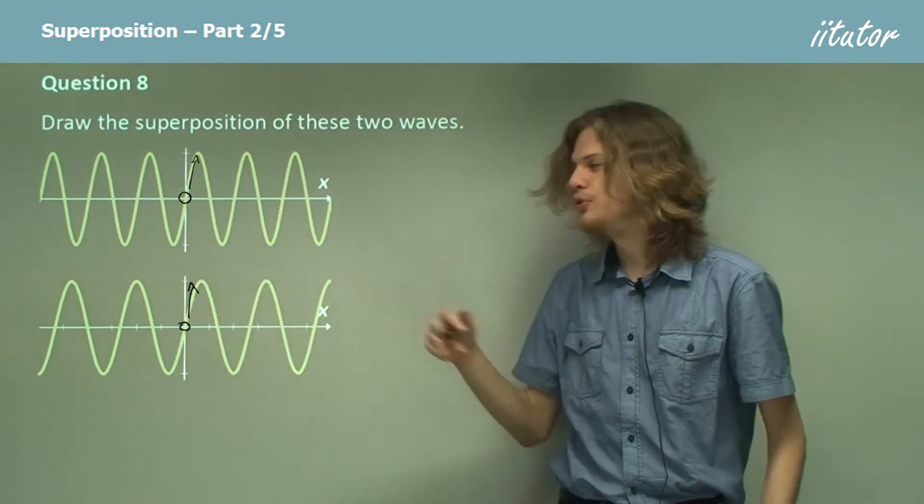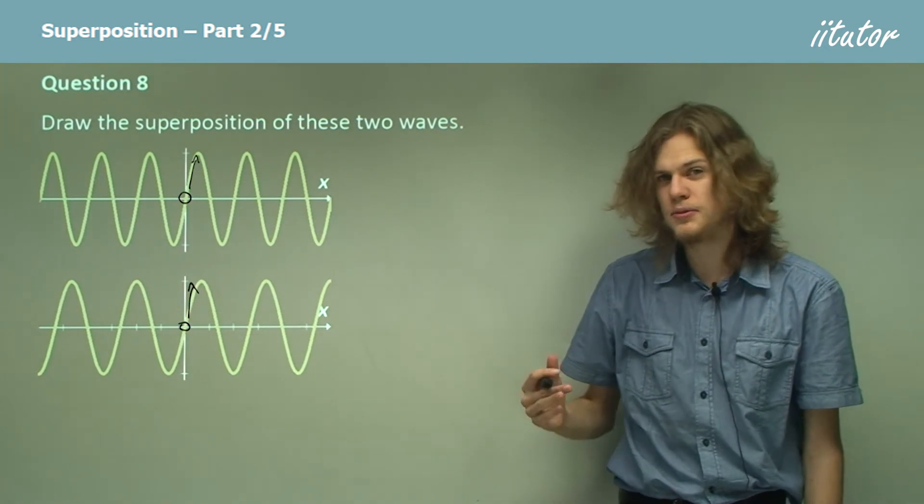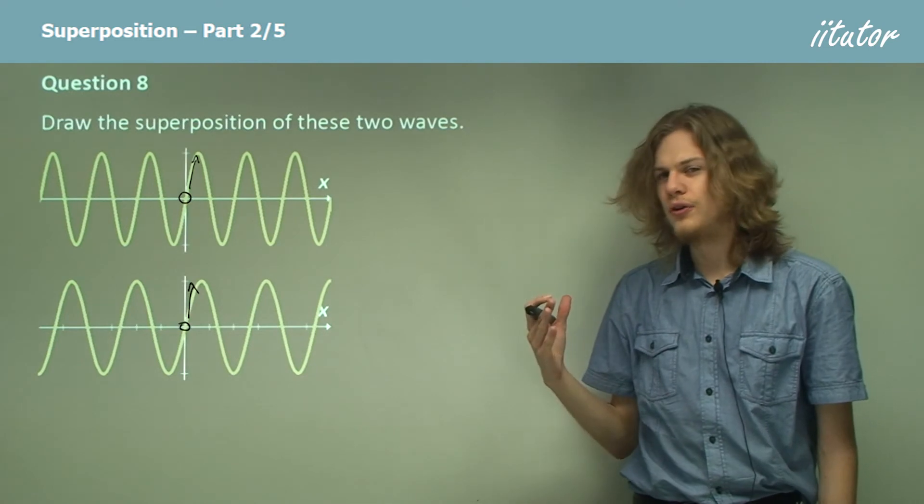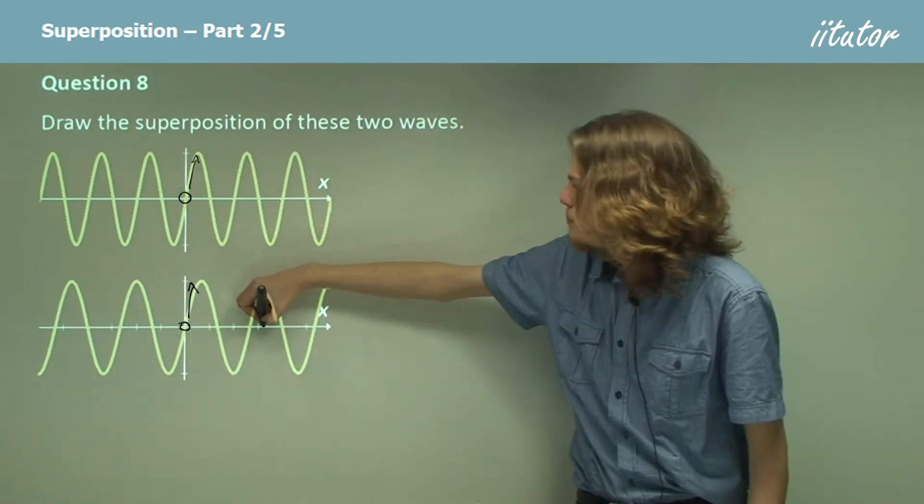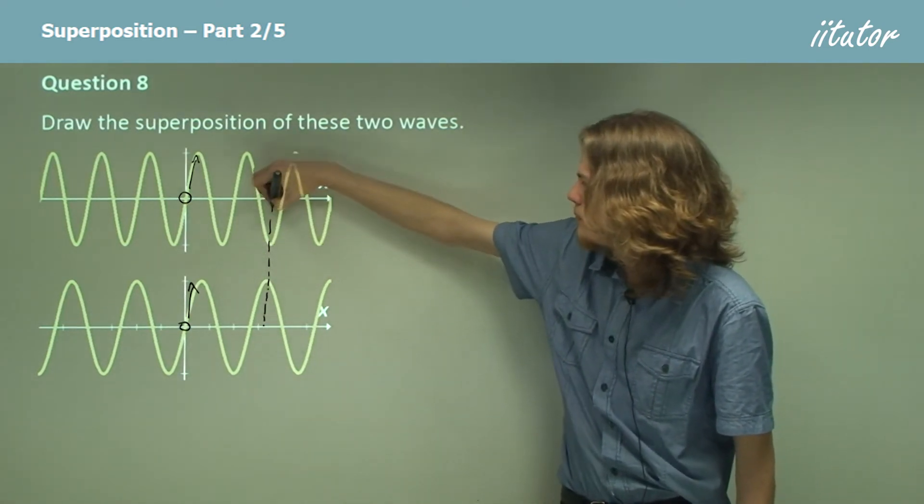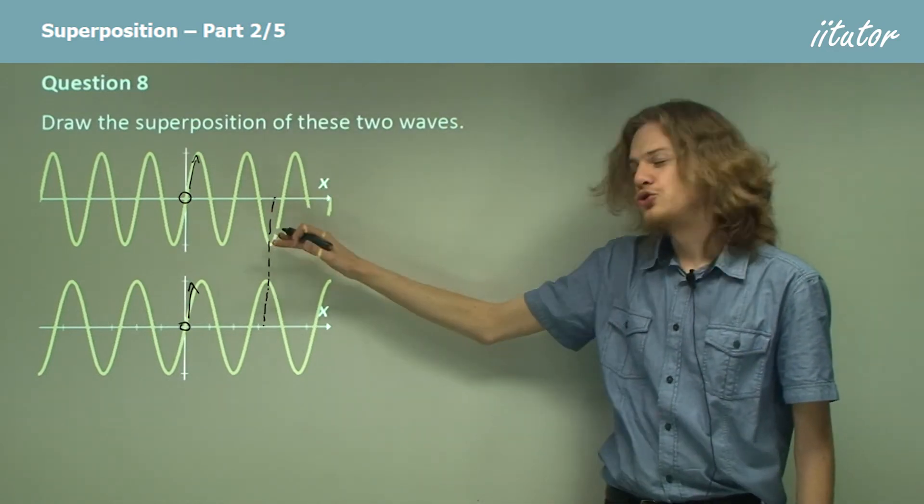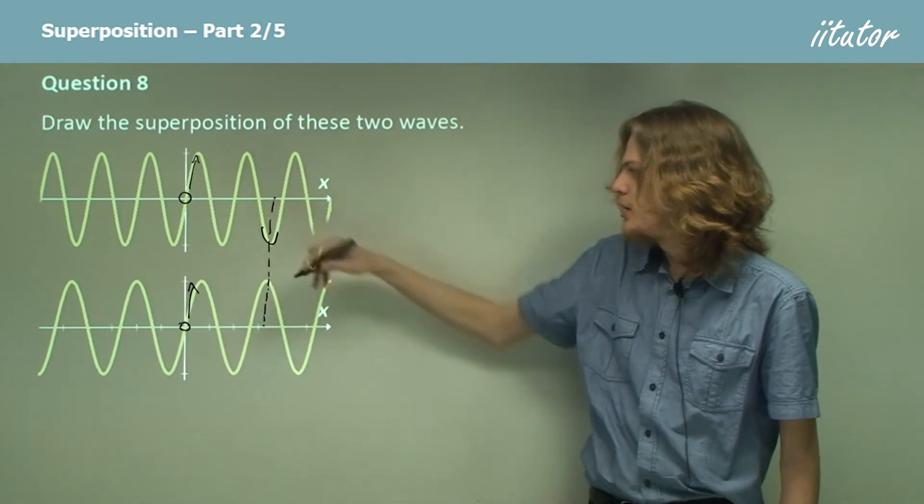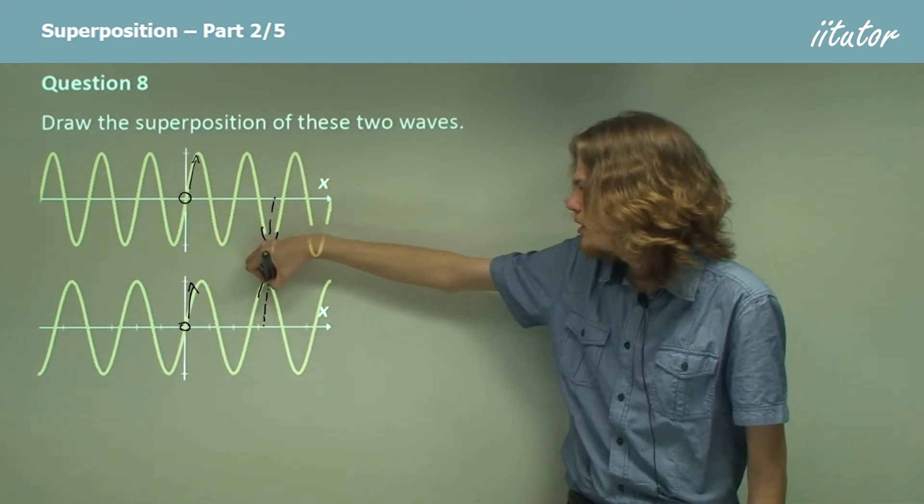But as we get further and further out, we get further and further out of phase. By this point in the wave, the trough of the top wave—that is, the minimum—matches up with the crest of the bottom wave.